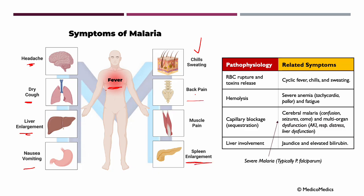Back pain and muscle pain reflect the systemic inflammatory response and the destruction of red blood cells, which affects muscles and joints. Spleen enlargement happens as the spleen filters and removes infected and damaged red blood cells from circulation, and this can cause discomfort and increased vulnerability to rupture in severe cases. If we have red blood cell rupture and toxin release, we should see cyclic fever, chills, and sweating. If we have hemolysis — the burst of red blood cells — we should expect severe anemia and symptoms of tachycardia, pallor, and fatigue.